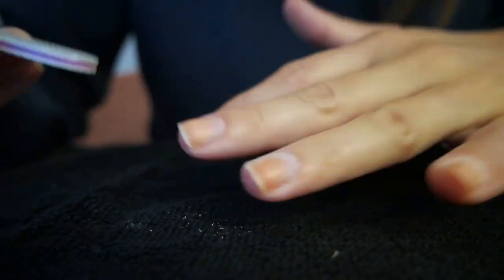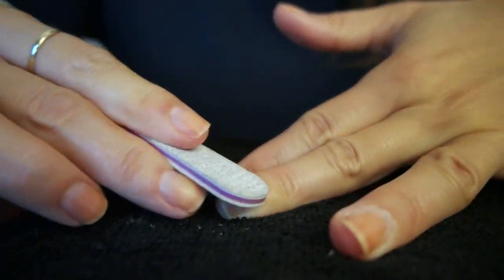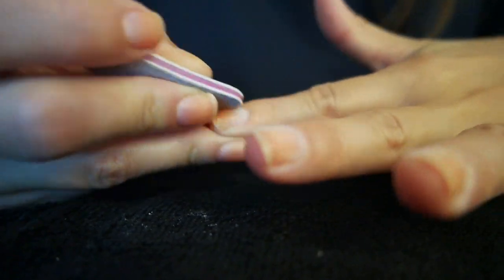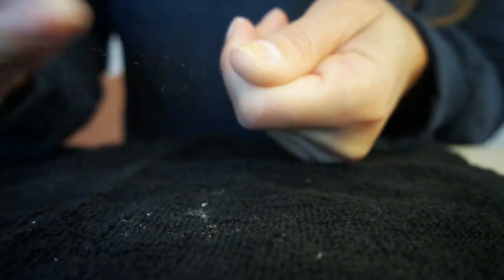It's kind of an annoying step, but it's really crucial for creating the perfect gel manicure. I'm just going to go ahead and do that to all of my other fingers, and from there we're going to take the pH bond.